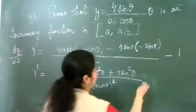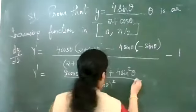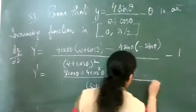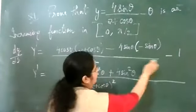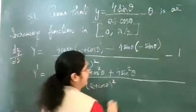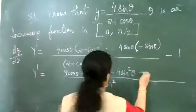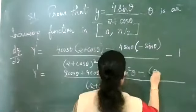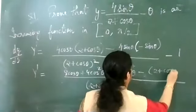This −1 will be there from differentiating −θ. So we subtract it. After combining, we have: y-dash = [expression from quotient rule] minus 1, which means we carry (2 + cosθ) in the denominator, and the combined numerator gives us the result we will simplify.